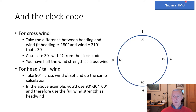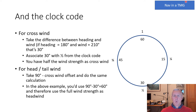The second thing worth understanding is the clock code, which helps us make a mental estimate of how much the wind is affecting our track — how much drift we have. Depending on the angle of the wind compared with our heading, we can estimate the amount of crosswind drift using this clock code.